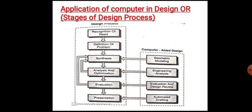For complicated objects, it is very difficult or sometimes impossible to carry out analysis a large number of times until the optimum solution is obtained. This difficulty is overcome by CAD. In computer-aided design, engineering analysis of any complicated object can be carried out in the shortest time using engineering analysis software like finite element analysis, or FEA software. The analysis is carried out on the geometric model and the output is presented in textual as well as graphical form on the graphic screen.